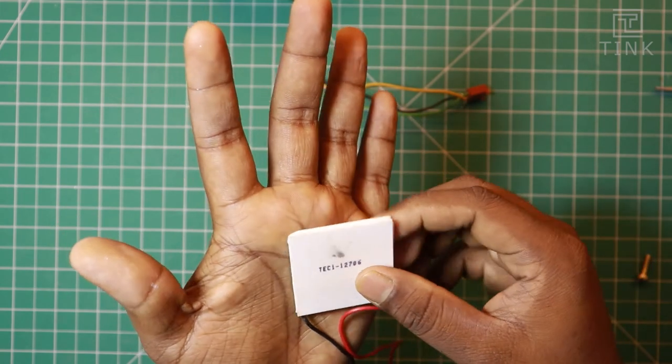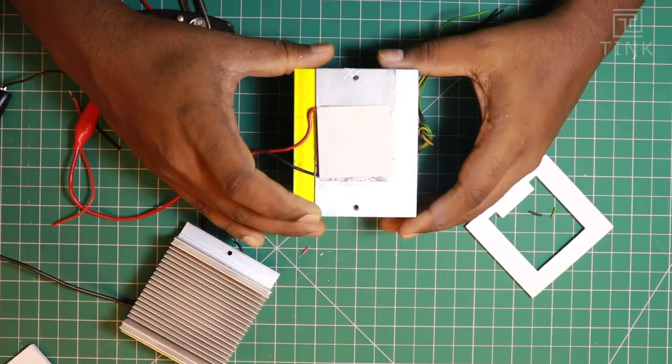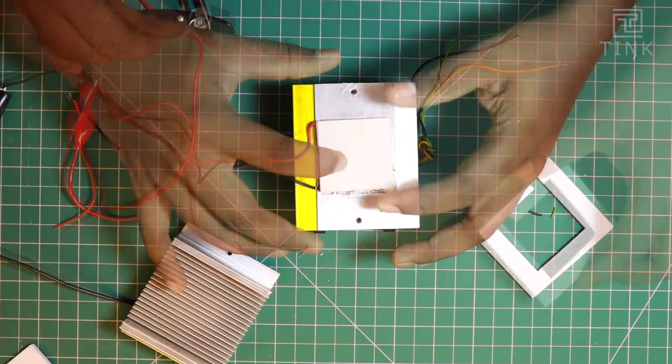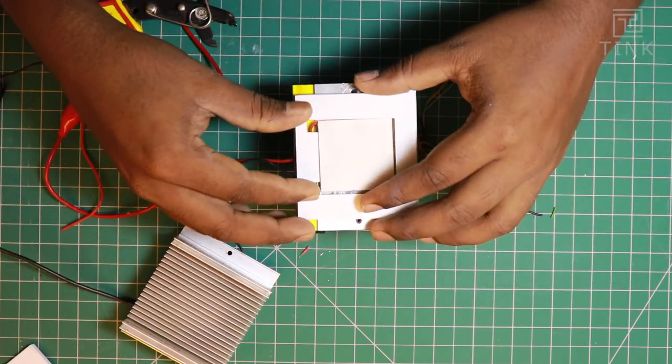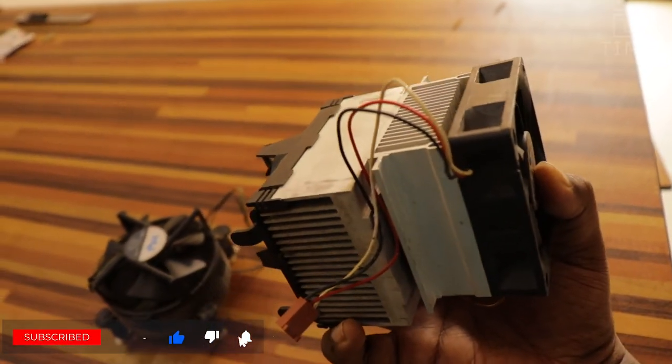This module is called a thermoelectric cooler in the industry. In order to get the best results we have to use a heatsink and a fan on the hot side to push the heat out of the module. Similarly we will use another fan on the cold side to circulate the cool air within the fridge.